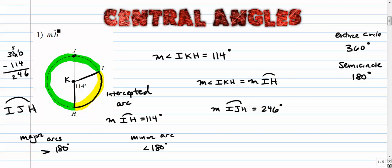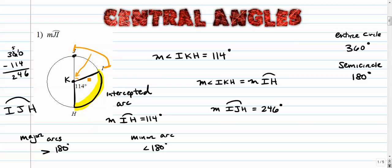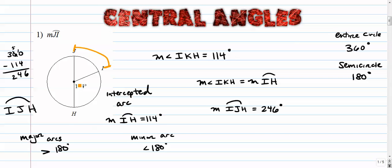The question is asking for the measure of arc JI. Arc JI is a minor arc — two letters means it's a minor arc, so it has the same exact measure as the angle right in there. If there's a center point given, we assume that means we have a diameter, which means these two angles are supplements of each other. So 180 minus 114 gives us 66 degrees. The measure of arc JI is 66.